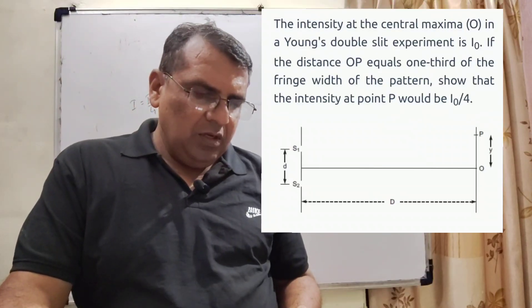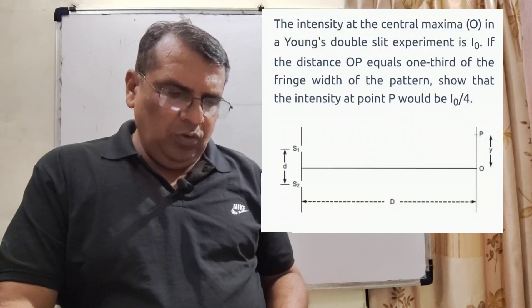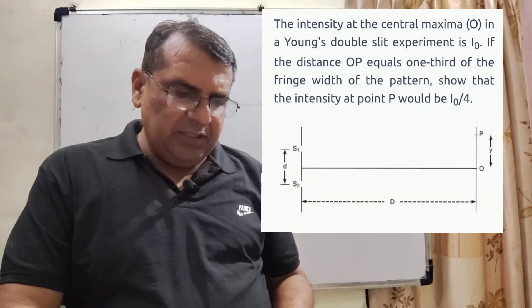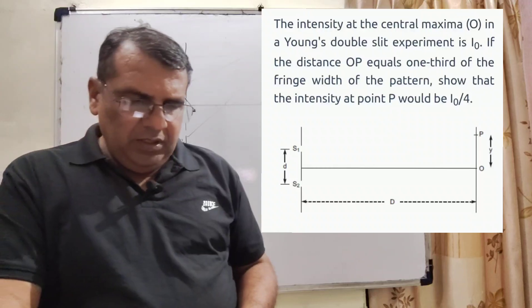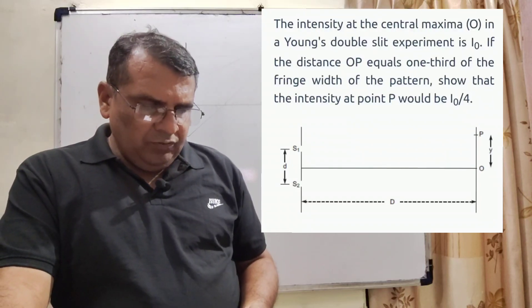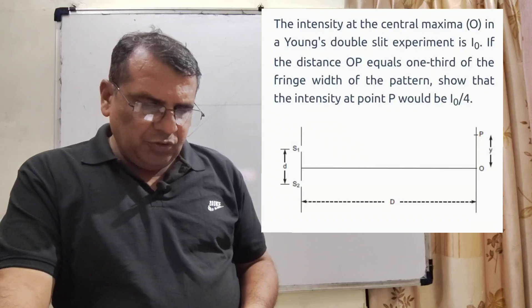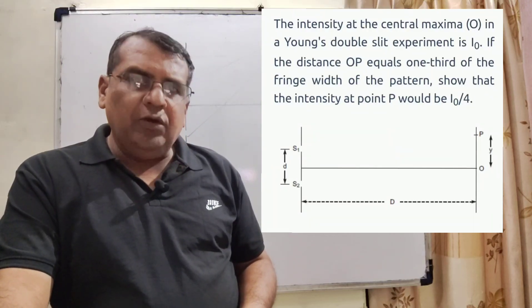Now here is the question. The intensity at the central maxima O in a Young double slit experiment is I0. If the distance OP equals one third of the fringe width of the pattern, show that the intensity at point P would be I0 by 4.